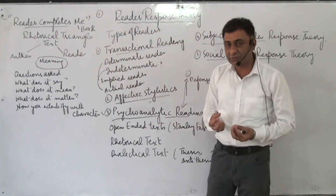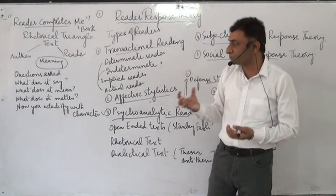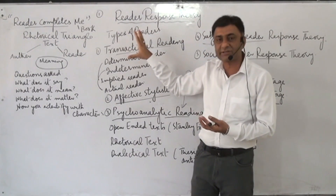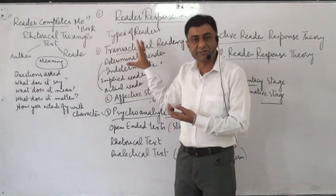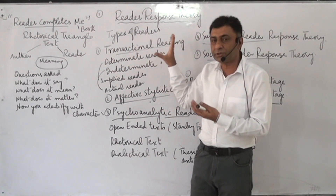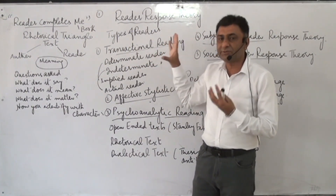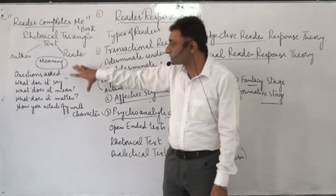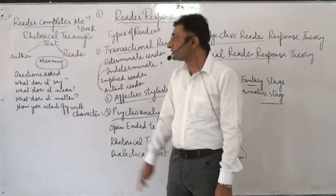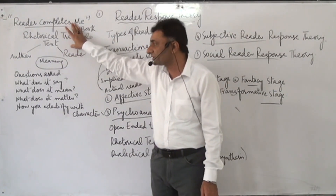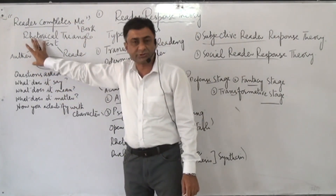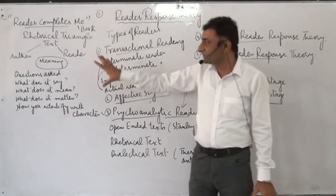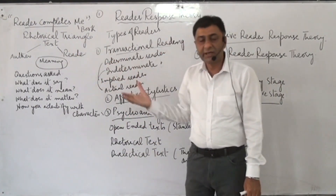According to reader response theory, the reader is the source of meaning. Whatever meanings a reader draws from a piece of literature — those are the real meanings. Books always say that readers complete them; when readers complete them, it means readers give them meanings, give them shape, give them importance in this universe. So in this triangle, the reader is the source of meaning.